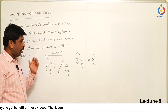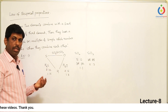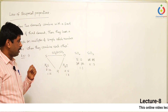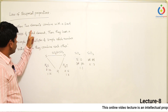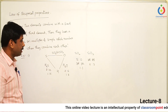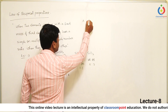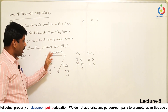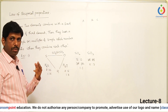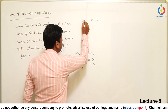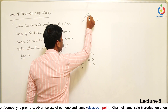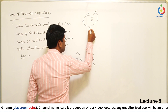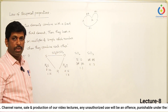Now the question arises: how to identify whether given options follow the law of reciprocal proportions or not? There must be 3 elements — let us call them A, B, and C. These 3 elements must react with each other and produce 3 different compounds: A reacts with B to produce AB, B reacts with C to produce BC, and A reacts with C to produce AC. So there must be 3 different combinations.